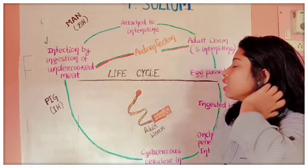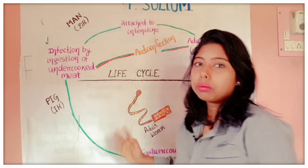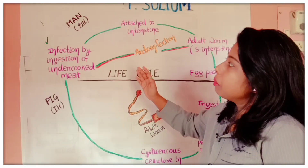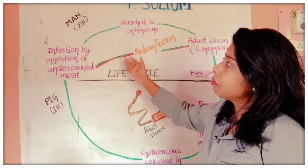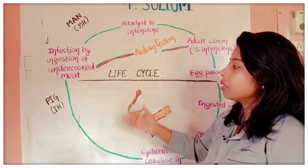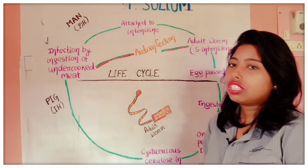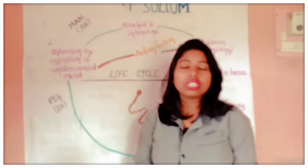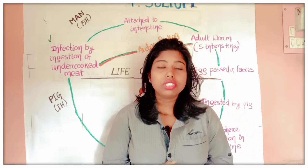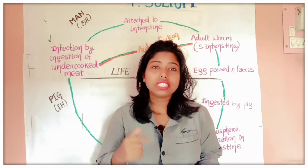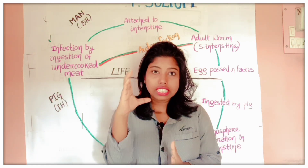So this is the life cycle — it may be digenetic, with the definitive host being man and the intermediate host being the pig, or it may be monogenetic in the case of auto-infection. Auto-infection is also possible. Now let us discuss some key points about Taenia solium so that it will be easier to remember everything in summary.